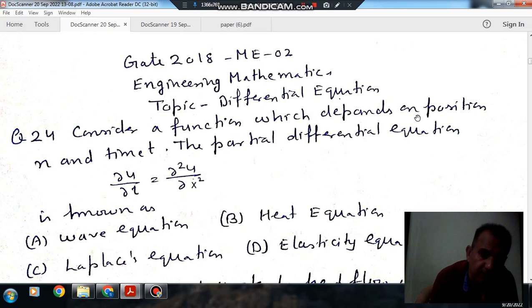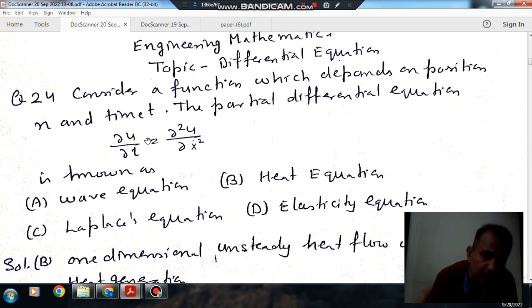Consider a function which depends on position x and time t. The partial differential equation ∂u/∂t = ∂²u/∂x² is known as: